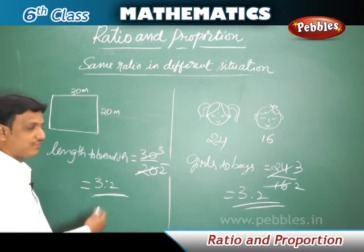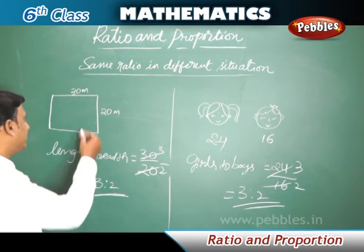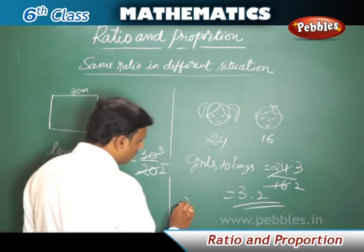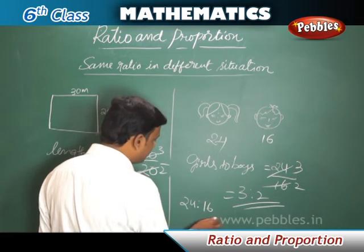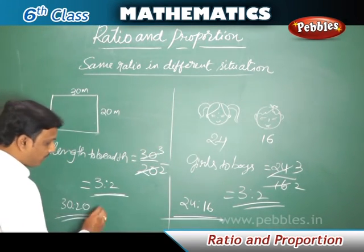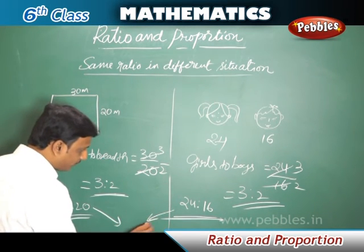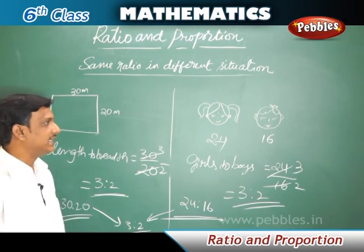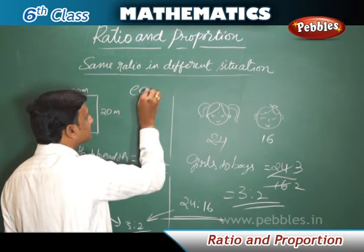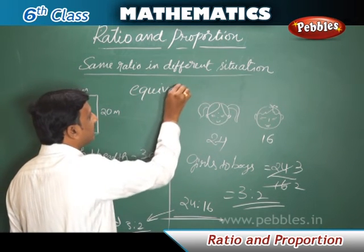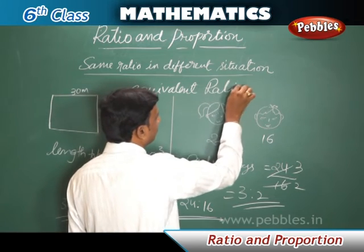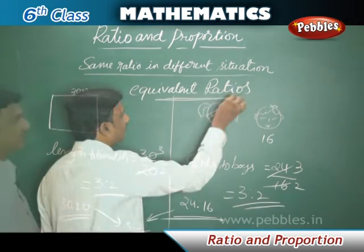In both cases we found the same value. The ratio 30 is to 20 and the ratio 24 is to 16 both have the same value of 3 is to 2 in their lowest form. Such ratios are called equivalent ratios — these two ratios are equivalent ratios.